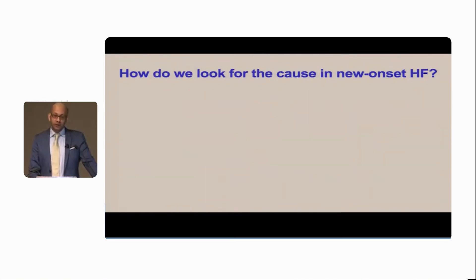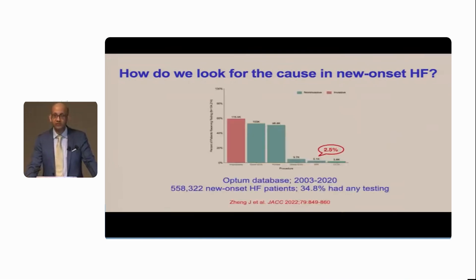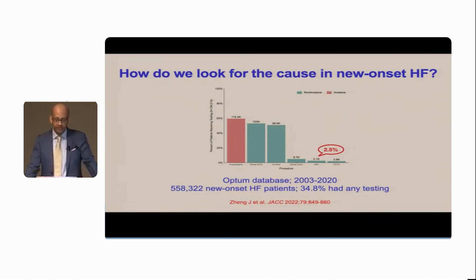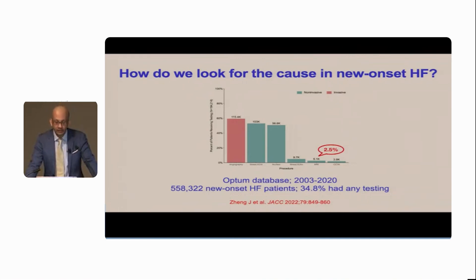So how do we look for a cause? Among patients, 20 to 40% of patients are evaluated for a cause. This is the largest and most contemporary study from the Optum database, a large American database of patients with both commercial insurance and Medicare. It spanned from 2003 to 2020 and included over half a million patients with new onset heart failure who were hospitalized. In this study, 35% had any testing.